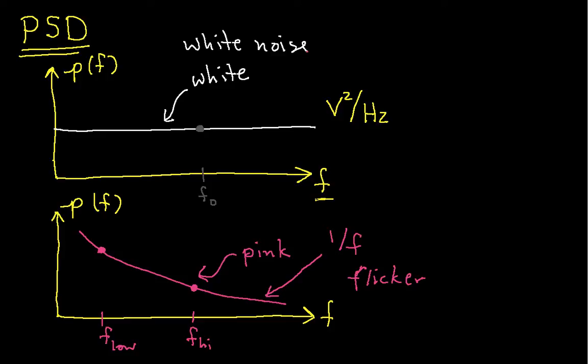If I want to find the power in a particular bandwidth, the power in a given bandwidth is the integral from 0, assuming that I'm starting at a frequency of 0, up to the frequency b of the power spectral density with respect to frequency.